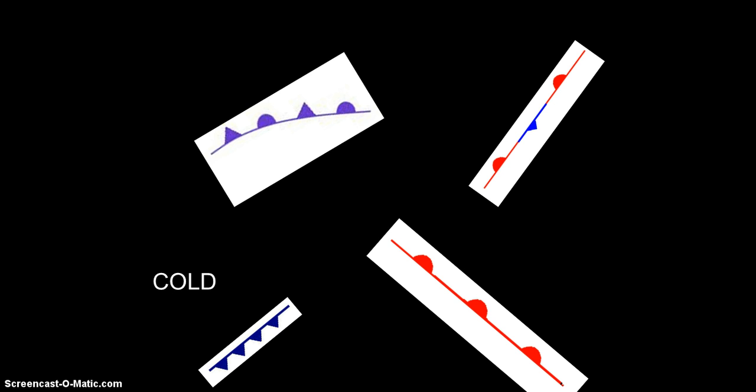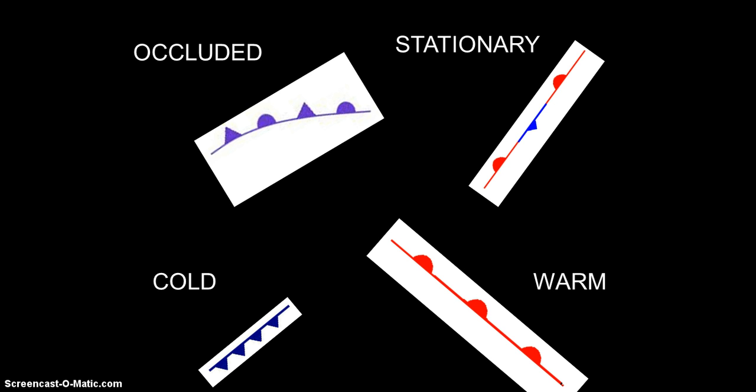Down here in the bottom left we have the symbol for a cold front. To our right, that is the symbol for a warm front. Upper right, that is the symbol for a stationary front. And then upper left is the symbol for an occluded front.